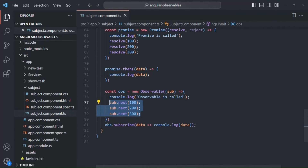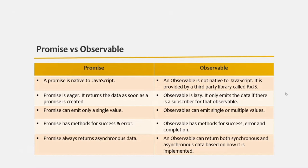There are also some other minor differences. A Promise has only methods for success and error — resolve to emit data and reject to emit an error. But an Observable has three methods: next for emitting data, error for emitting an error, and complete for emitting a completion signal. Additionally, a Promise always returns asynchronous data — you cannot return synchronous data with a Promise. But using an Observable, we can return both synchronous and asynchronous data depending on how we implement it.